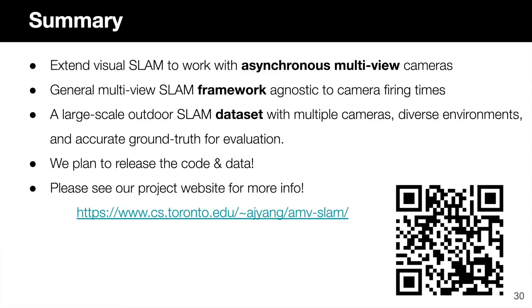To summarize, in this work we studied the multi-camera SLAM problem where the cameras can be asynchronous among themselves. Our proposed framework incorporates asynchronous multi-frames and a continuous-time motion model to perform tracking, local mapping, and loop closing. To evaluate our method, we propose and will make public a large-scale SLAM benchmark with diverse motions and environments. Our experiments have shown that correctly modeling the sensors as asynchronous and using multiple cameras are crucial building blocks towards accurate and robust SLAM in the real world. We plan to release our dataset as well as the code to the community. Thank you for coming to our presentation — please check out the project website for more details.